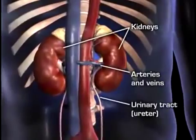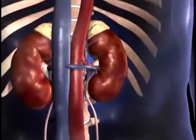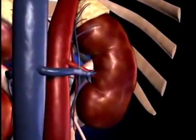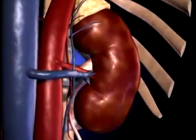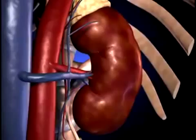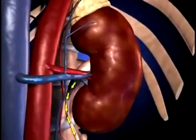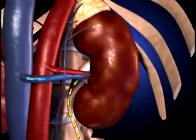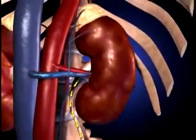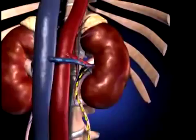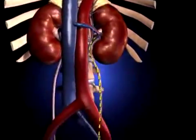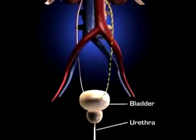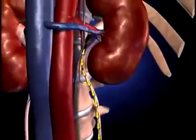The renal system consists of the kidneys, the connecting arteries and veins, and the urinary tract. The kidneys are paired, bean-shaped organs lying outside the peritoneal cavity in the back of the upper abdomen, one on each side of the vertebral column.